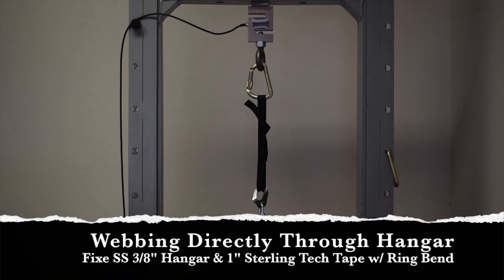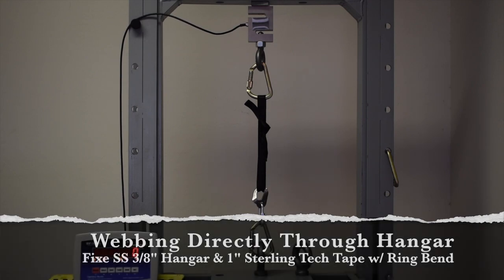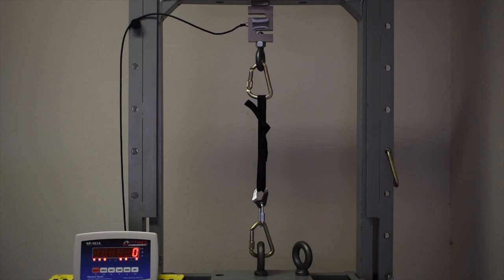Alright, this is 43 inches of 1 inch tech tape tied with a water knot through a hanger through steel carabiners, and we're going to pull it to failure just to see how it breaks if rigged directly on the hanger.